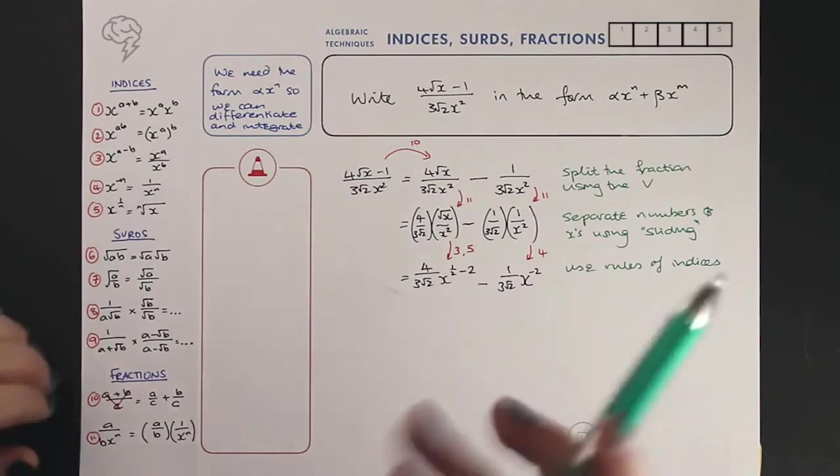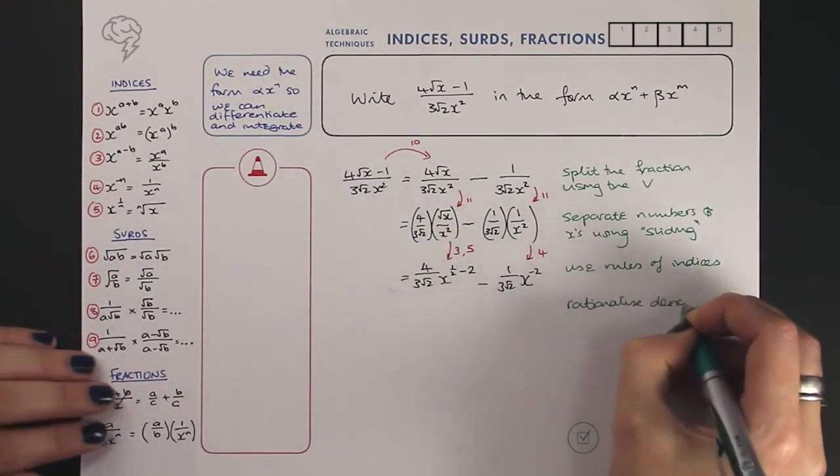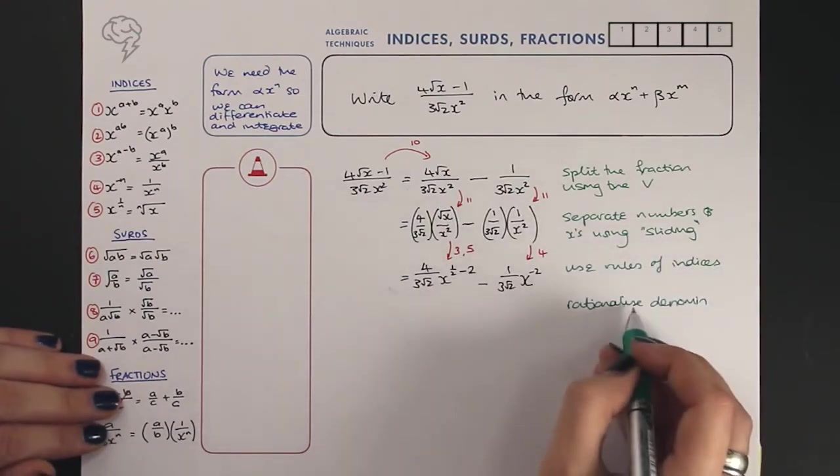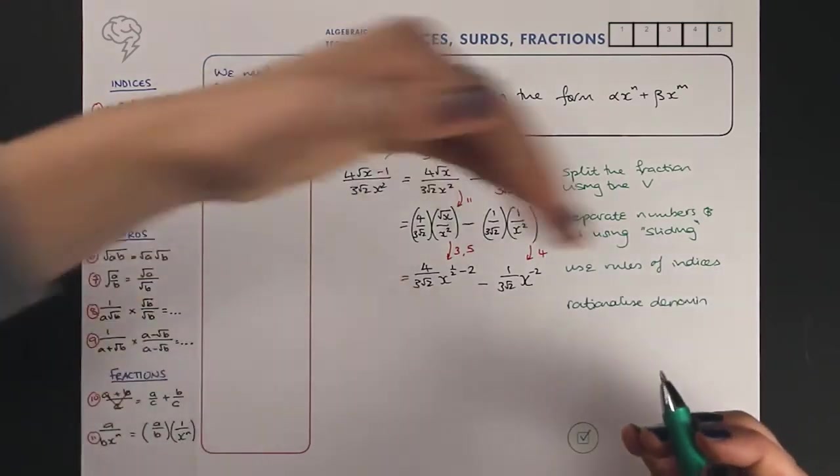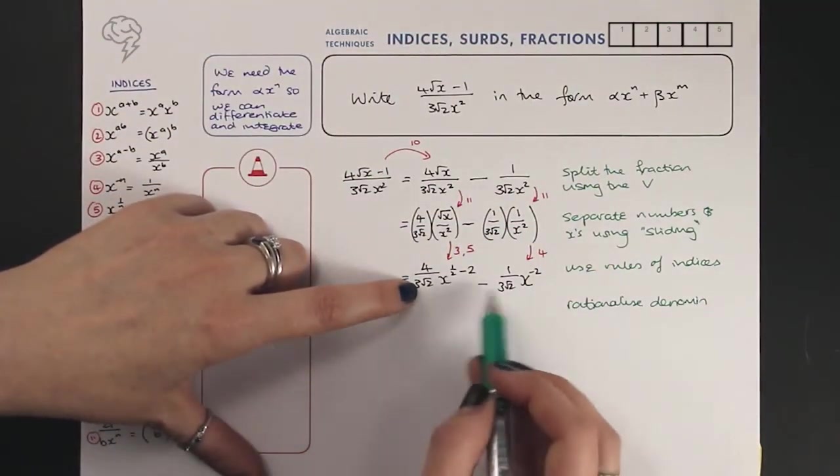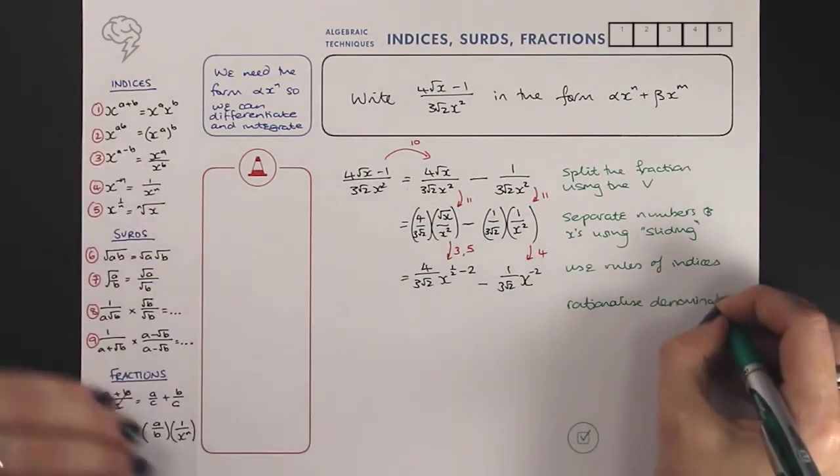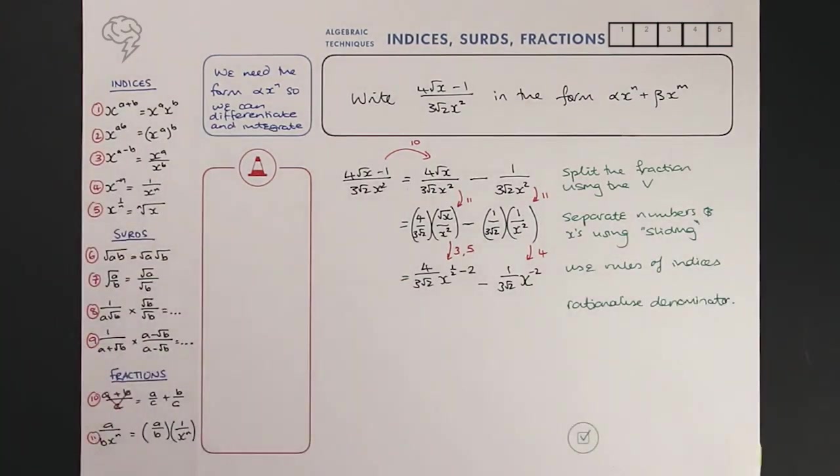Next job is, we're nearly done, rationalize the denominators. What that means is, rationalize is to make rational, and rational numbers can be written as fractions. Root two cannot be written as a fraction, so that is not a rational number. So we don't want it on the denominator.